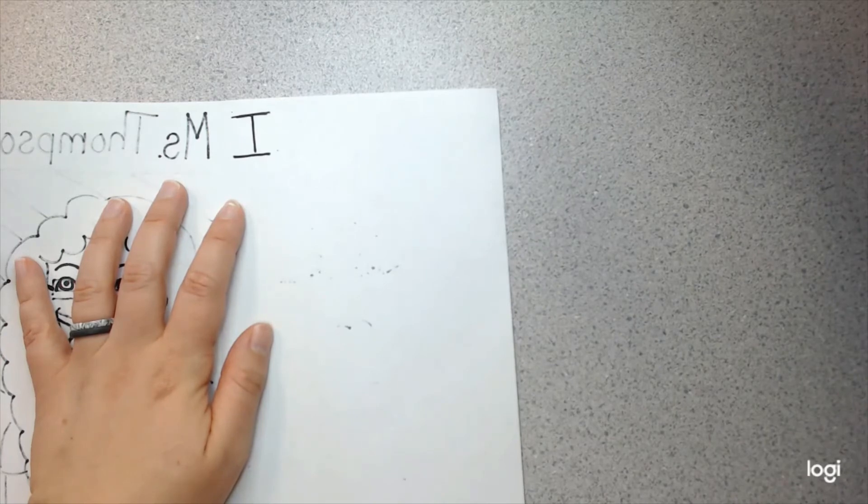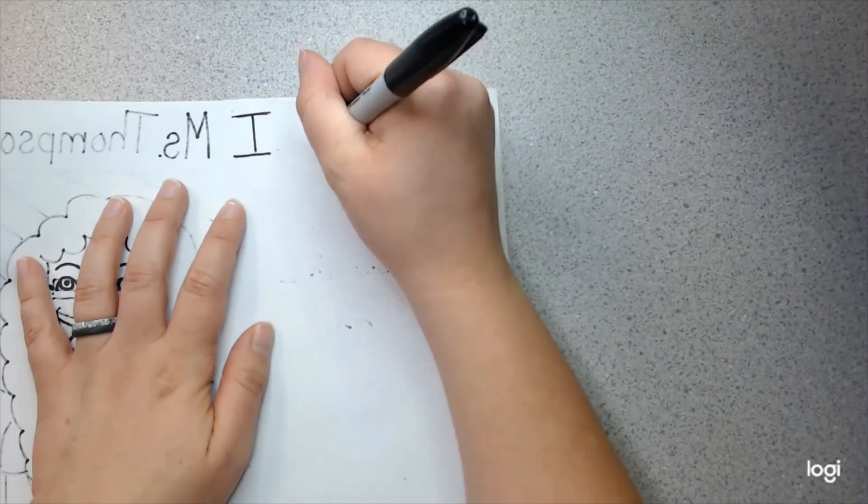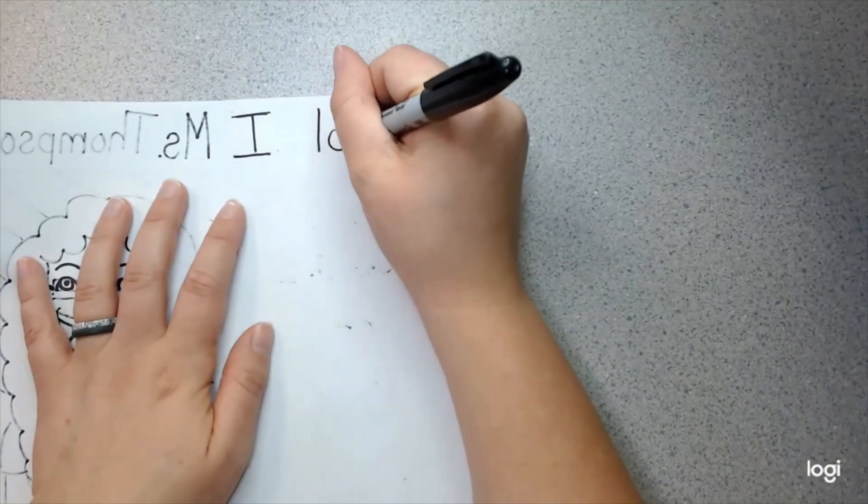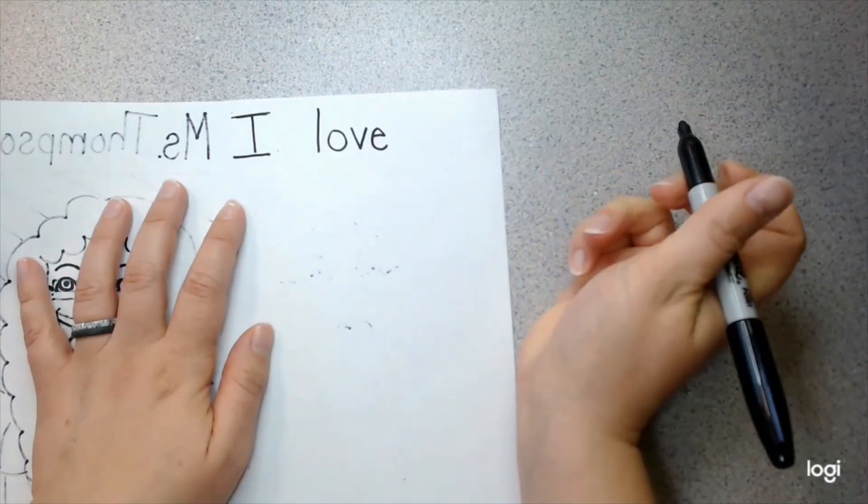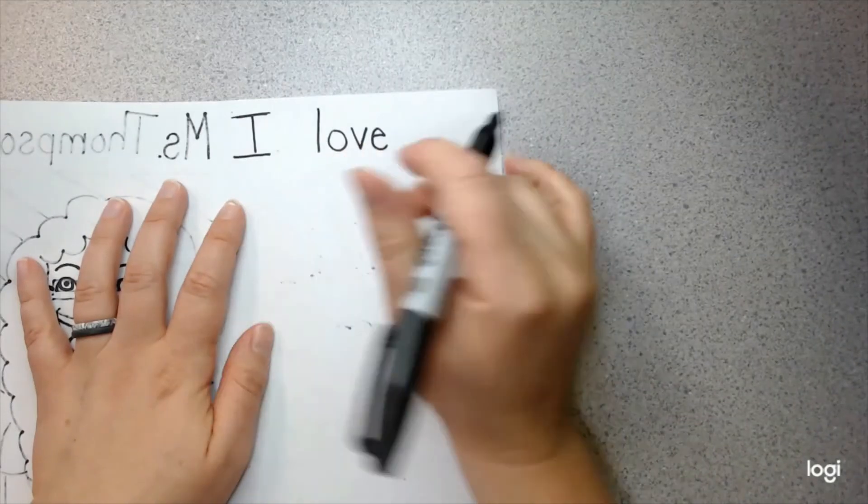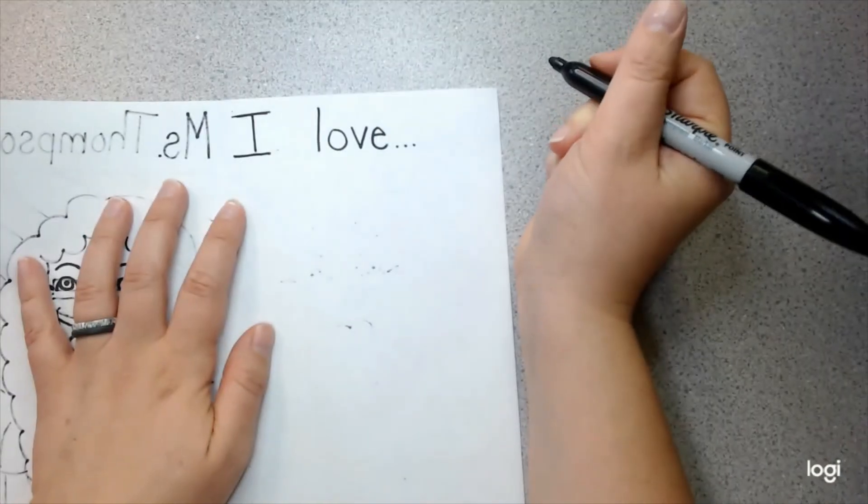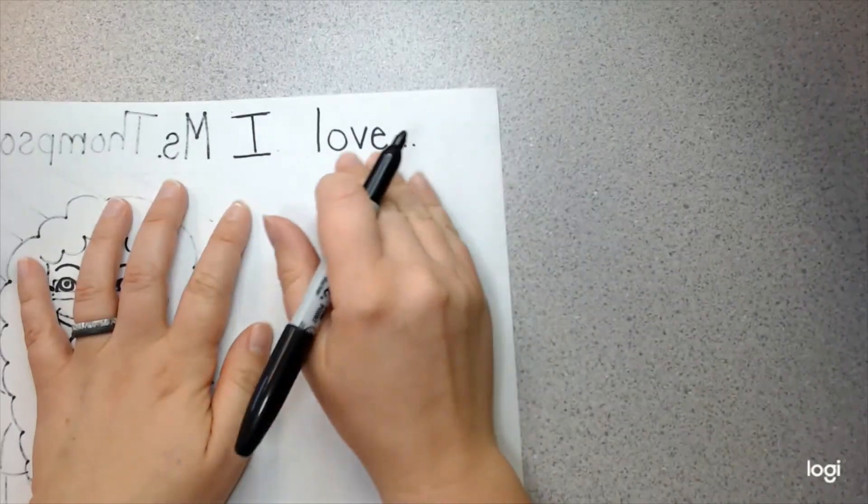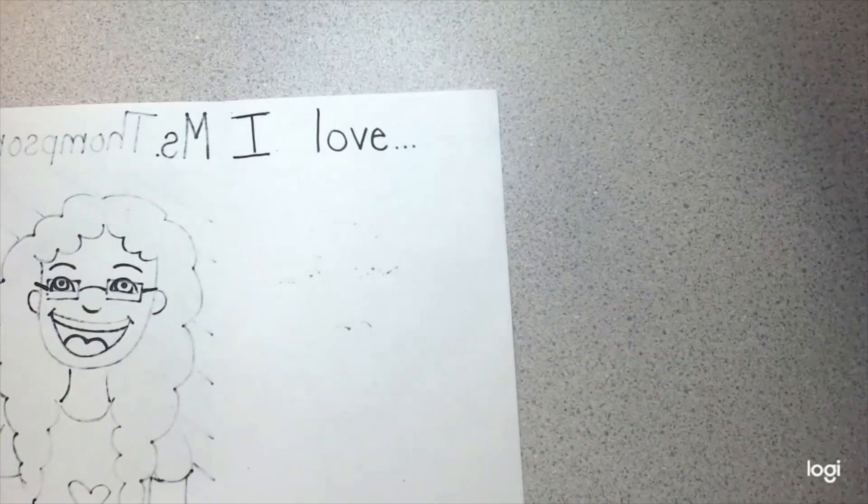What sounds do you hear at the beginning of the word love? Oh. Good. L. Love. I love. And then I'm going to do a dot, dot, dot. That ellipsis means that I'm trailing off. I love. And then I'm going to draw all the things I love.